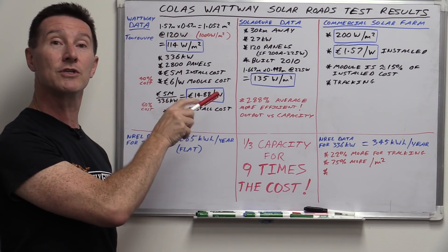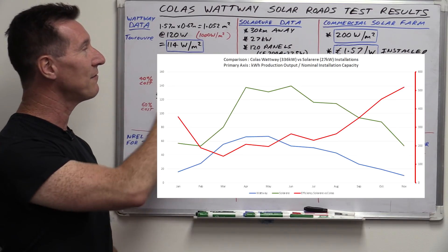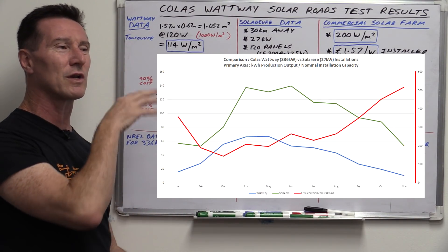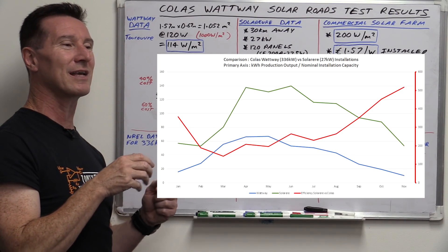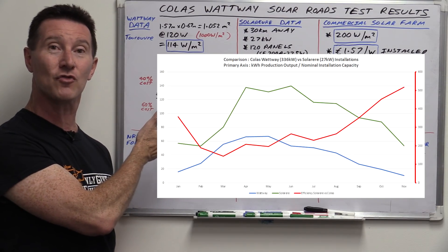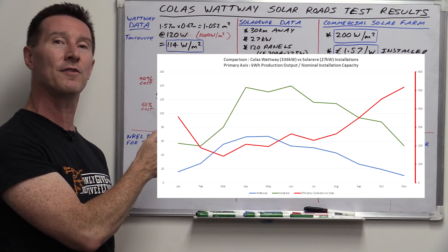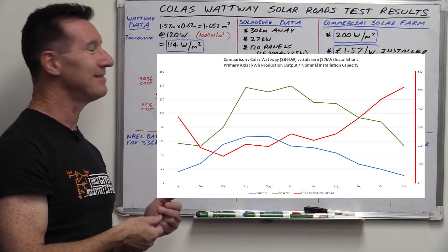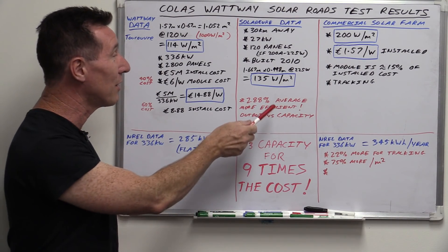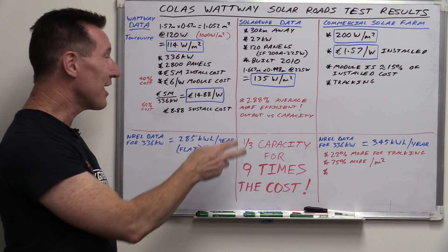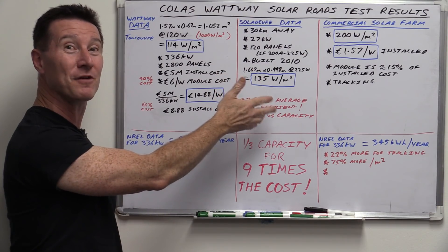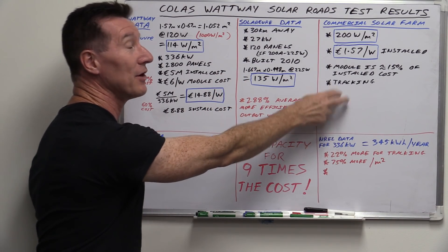You can see the graph there. They kind of sort of track generally. So it's not like a couple of weeks after cars started driving it just drastically dropped or anything. But it's doing all right. But you're still getting that huge amount of loss, 288%. So it's like a third the efficiency of just a pretty average home installation, let alone a commercial one. No contest.